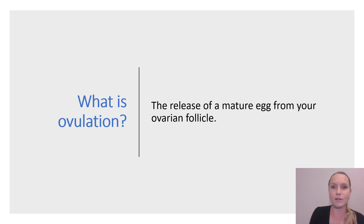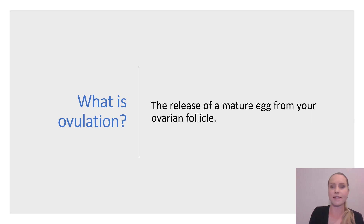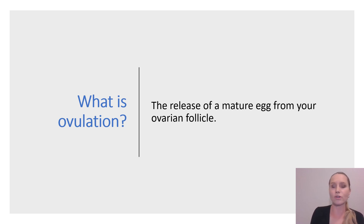The growing follicle secretes increasing amounts of the hormone estrogen, and following peak estrogen production, there is that surge of luteinizing hormone, and this hormone triggers the release of the mature egg from its follicle — and this is ovulation.